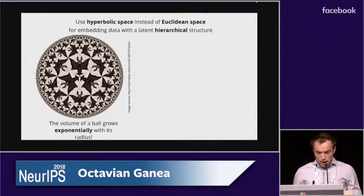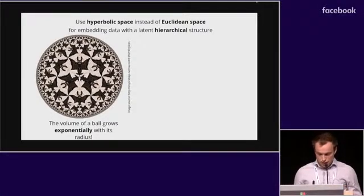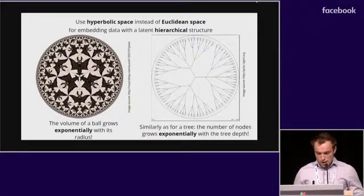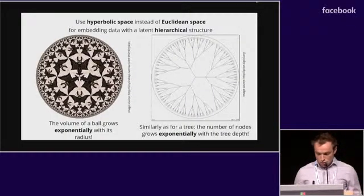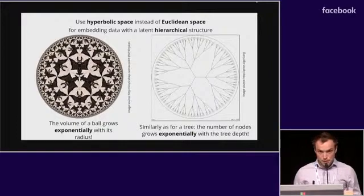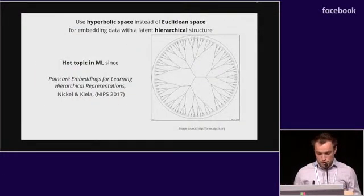So in this picture here, every bat has equal area. This is the same as for a tree. The number of nodes in a tree grows exponentially with the tree depth. In Euclidean space at some point you will run out of capacity or you have to increase your dimensionality exponentially to fit this, but not in the hyperbolic space where two dimensions are enough.